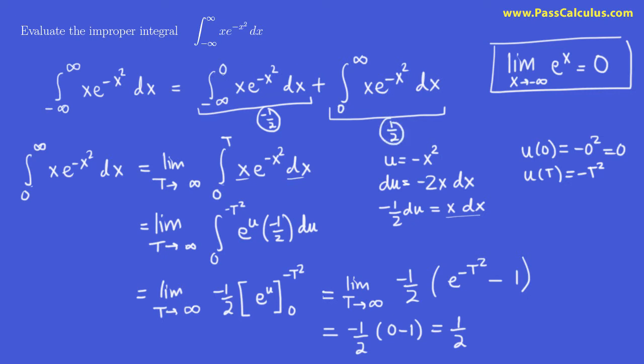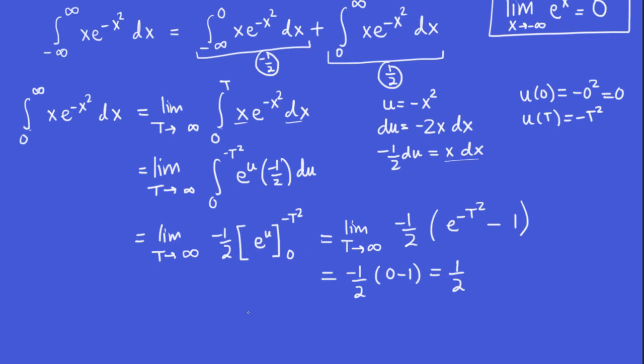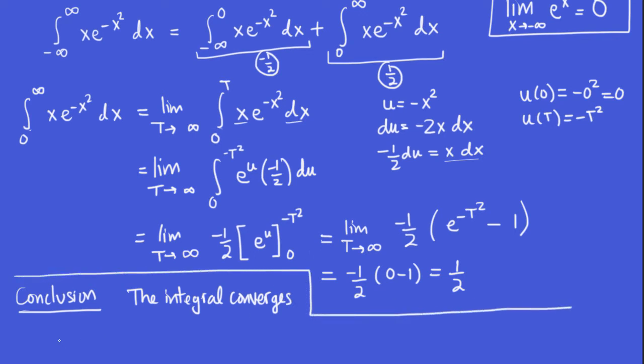So what have we determined here? We evaluated this, we got negative one-half. It converges. We evaluated this one. We got one-half. So it also converges. Therefore, our conclusion is that both of these converge. And therefore, the answer to my original question is this integral converges. And the final result is whatever the sum of these two individual integrals are. So our conclusion is that the integral in the question converges because each of those separate integrals converge.